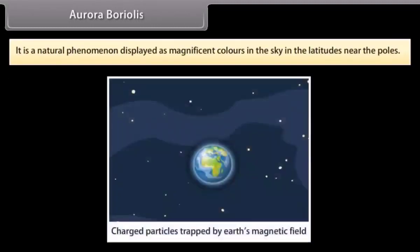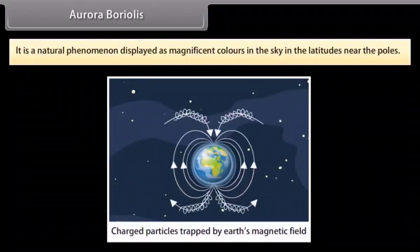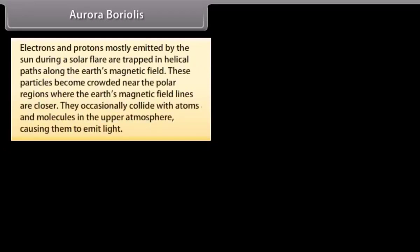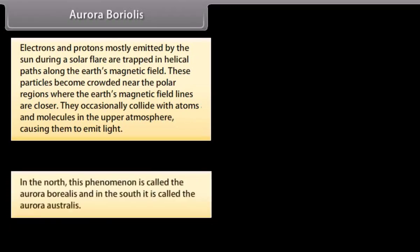Aurora is a natural phenomenon displayed as magnificent colors in the sky at latitudes near the poles. Electrons and protons, mostly emitted by the sun during a solar flare, are trapped in helical paths along the earth's magnetic field. These particles become crowded near the polar regions where the earth's magnetic field lines are closer, and occasionally collide with atoms and molecules in the upper atmosphere causing them to emit light.